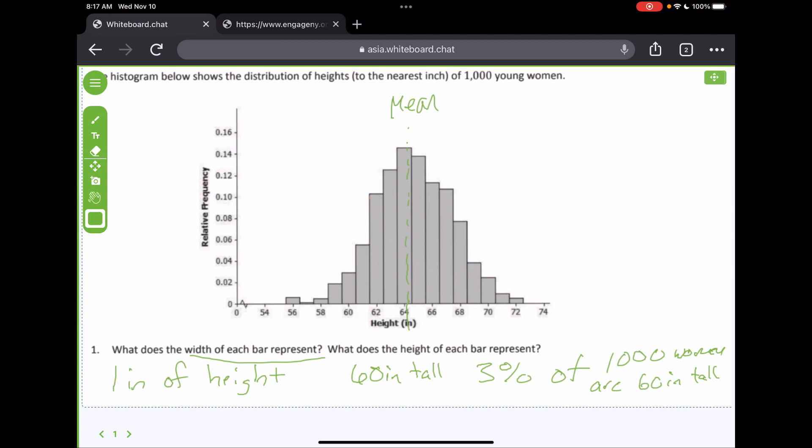Now, what's the standard deviation? Well, 64.6 minus 2.75, and 64.6 plus 2.75, what does that give us? So, the standard deviation, one standard deviation below, one standard deviation above the mean. Okay?